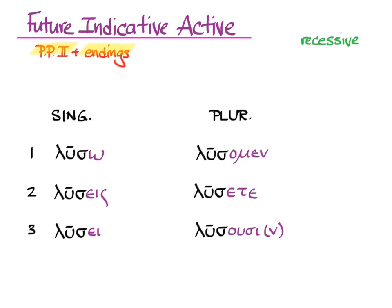And there's the nu movable if you want it. Now we need recessive accent, so we follow the rules for accent in the recessive pattern where we look at the last syllable and see how far back an acute accent can go. First person singular, luo: long last syllable, count one, two, and go back to the second to last syllable for the acute. Second person singular, lucis: long last syllable, count one, two, and put in the acute. Third person singular: long last syllable, one, two, acute. First person plural has a short last syllable, so we go one, two, three, and the acute goes on the third to last.